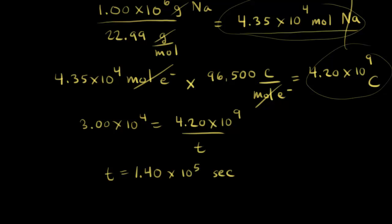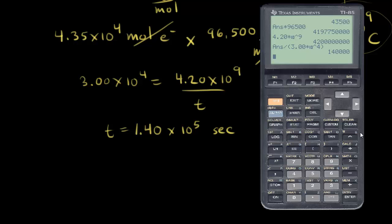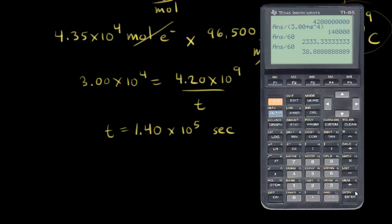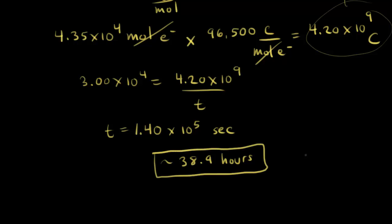We have our time. Let's convert that into something easier to comprehend. 1.40 × 10⁵ seconds divided by 60 gives us 2,333 minutes. Dividing by 60 again gives approximately 38.9 hours. So it would take us approximately 38.9 hours to make 1.00 × 10³ kilograms of sodium.